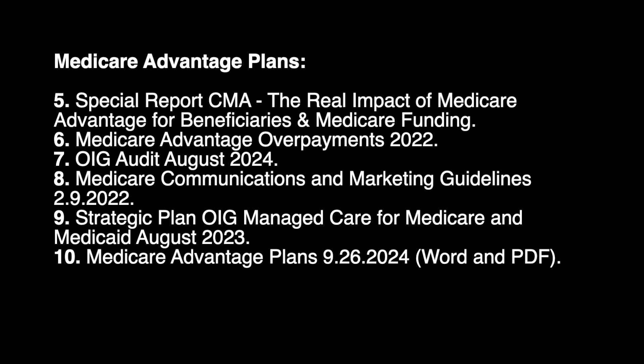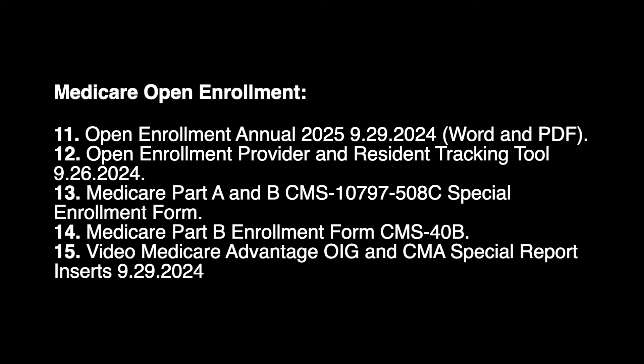Another handout is the OIG audit of August 2024. In addition, the Medicare Communications and Marketing Guidelines from February 9, 2022 — in other words, what a skilled nursing facility can and cannot say to a beneficiary — as well as the OIG strategic plan regarding managed care, and the Medicare Advantage plans write-up, both in Word and PDF, that I will be discussing today. You will also receive the Open Enrollment Narrative Write-Up in Word and PDF.